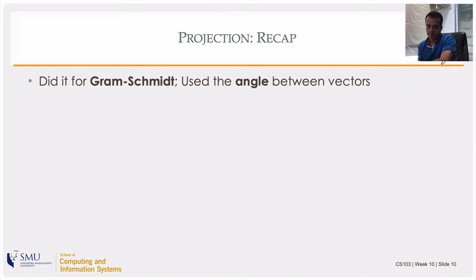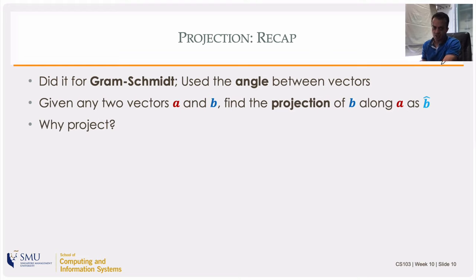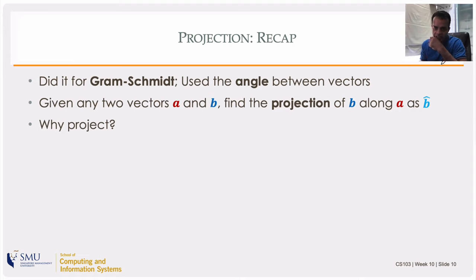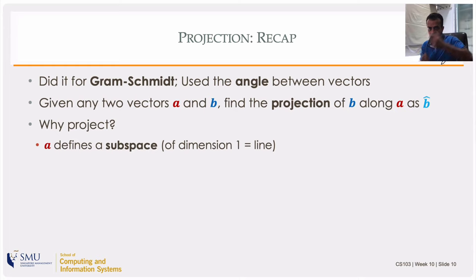Let's do a recap. We did it in Gram-Schmidt where we used the angle between the vectors. Given any two vectors — a red one and a blue one, a and b — if we find the projection of the blue one along the direction of a, we call it b-hat, the light blue one. A vector a also defines a subspace, since all scaled versions of a lie along that direction. So projecting onto a vector a is also projecting onto that subspace.